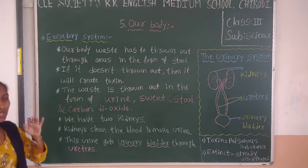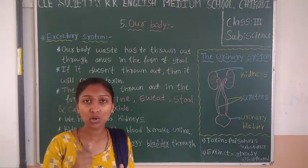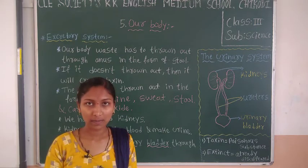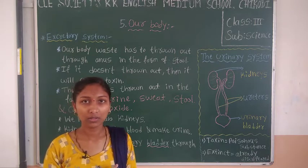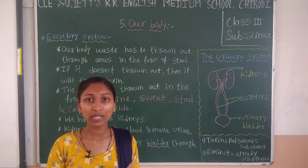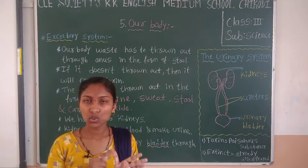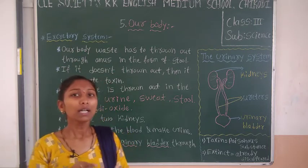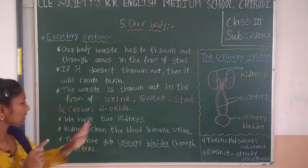Waste is thrown out from our body in different forms. First, solid waste — which is thrown out through the anus. Next waste is urine. After that, sweating, which comes from the skin. Then stool. And carbon dioxide — when we breathe out, our lungs release carbon dioxide gas. These are the different forms of waste.